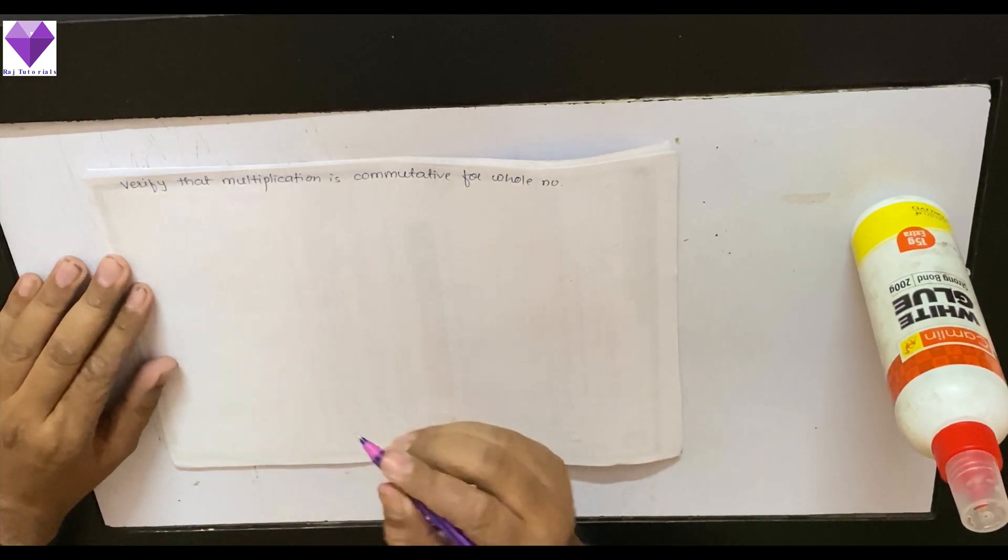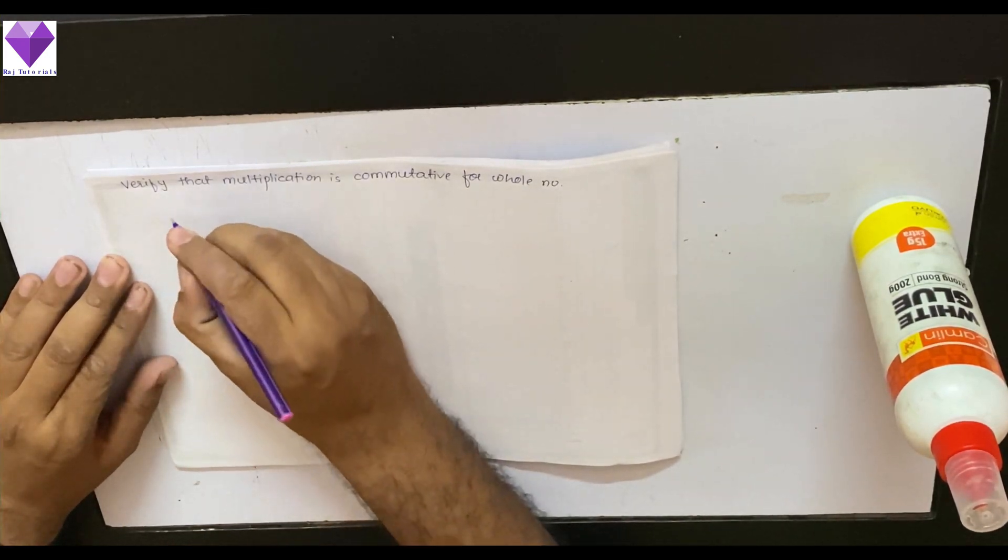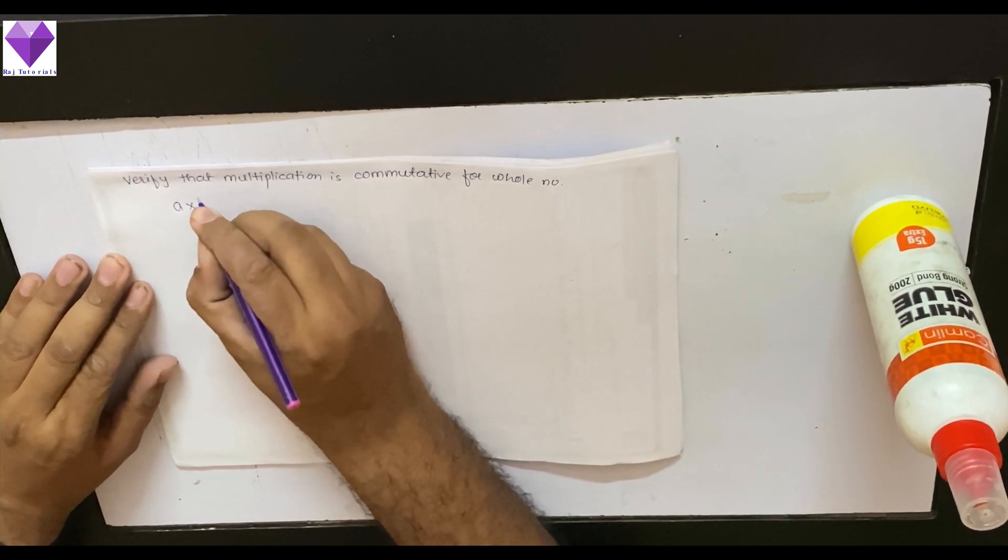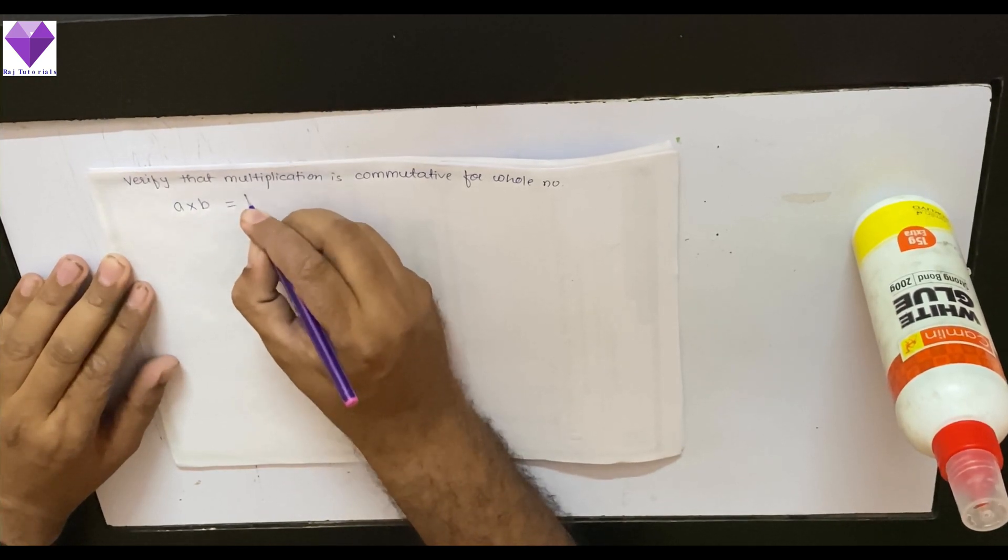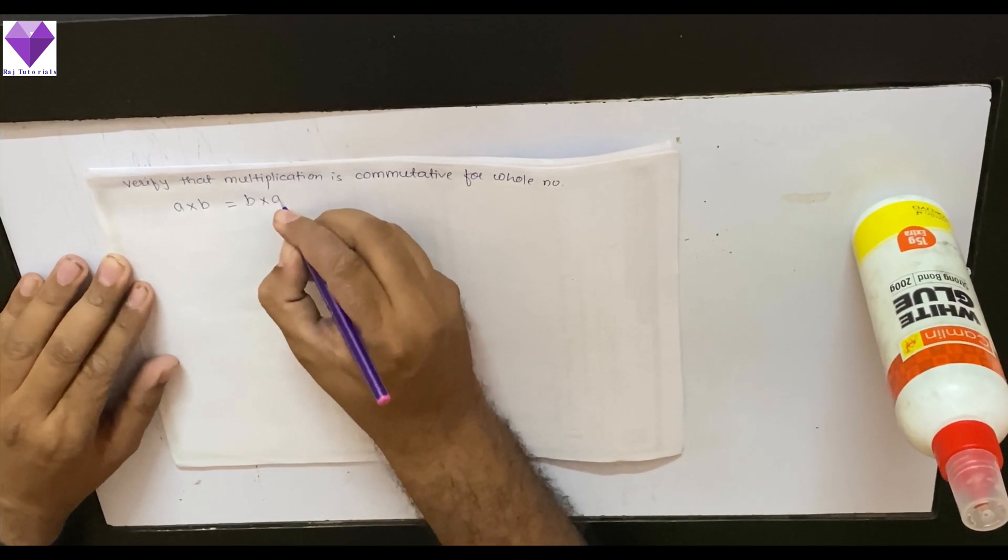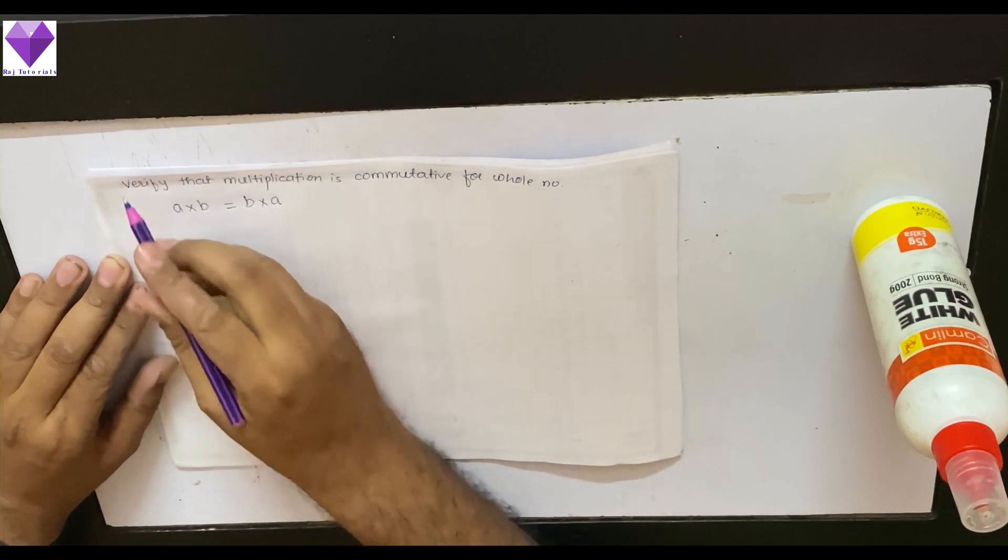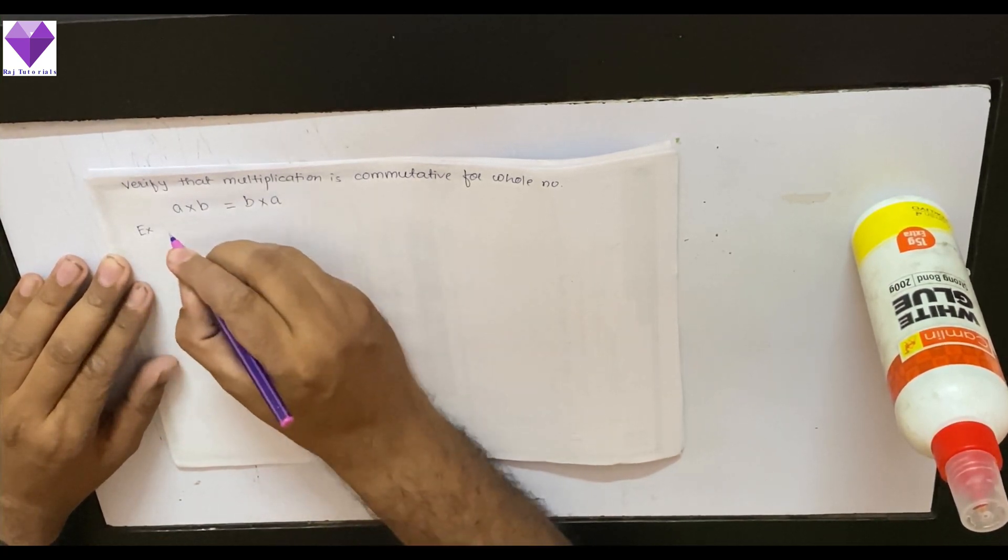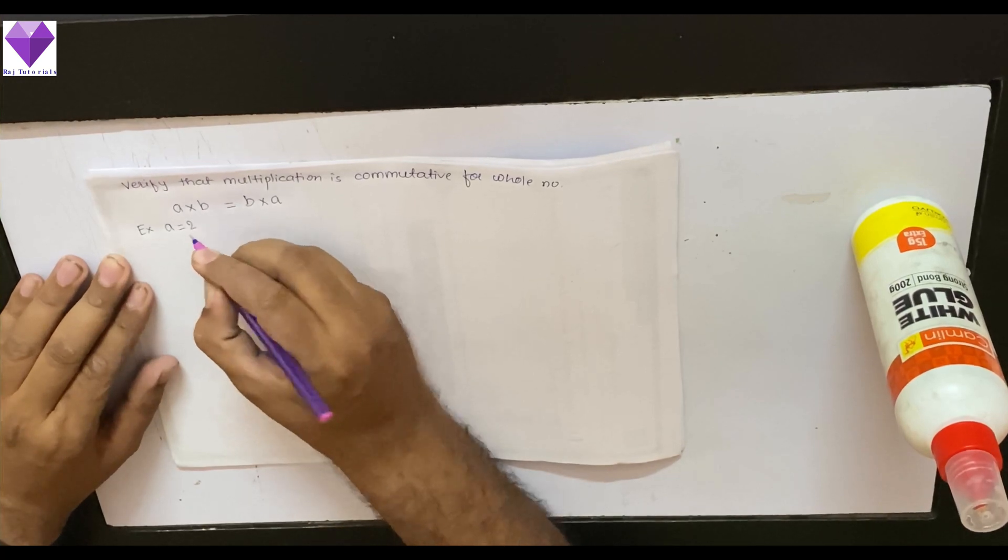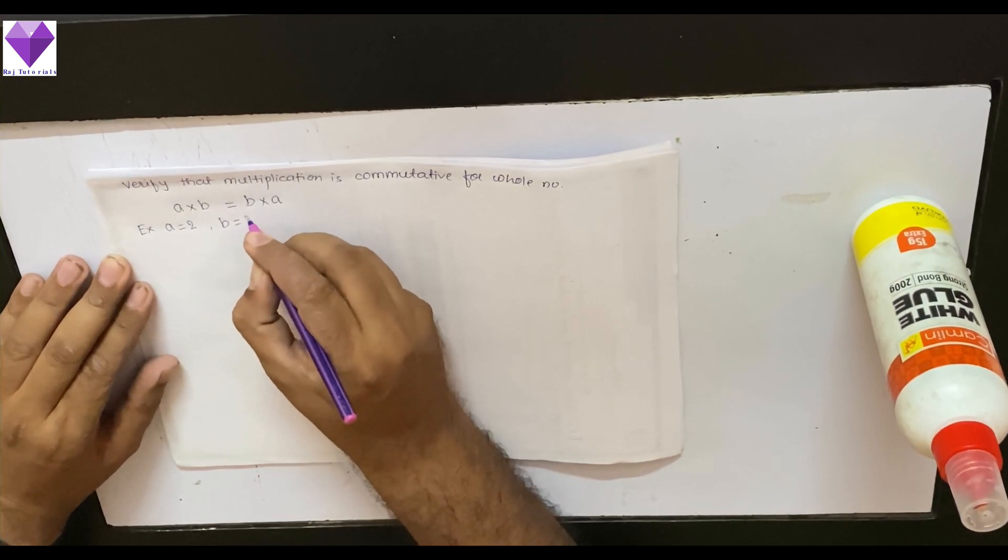Commutative property for multiplication says that A into B should be equal to B into A. Now, let us explain with an example. Suppose A equal to 2 and B equal to 3.